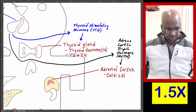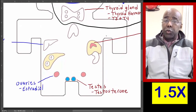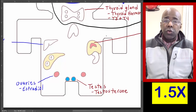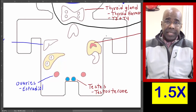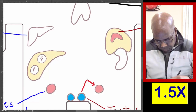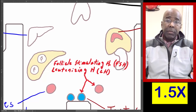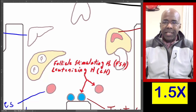Let's look next at the gonads. The gonads produce our sex hormones. The ovaries produce estradiol and the testes produce testosterone. However, these structures cannot produce these hormones of their own accord. The gonads are stimulated by two hormones: follicle-stimulating hormone and luteinizing hormone. These stimulate the ovaries and the testes to produce estradiol and testosterone, respectively.